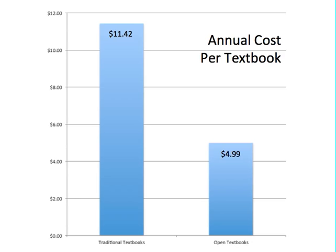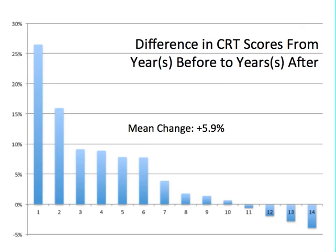What about outcomes? We've been watching student scores on the CRT test — Utah's state standardized tests. This chart shows the difference in scores in the years before teachers started using open textbooks versus the year or years after they started. What you see is an average increase of just about 6%. If the average teacher had 70% of her students proficient in chemistry before using open textbooks, that has moved up to about 76% after. So in the case of the Utah Open Textbook Project, we see that we can save significant costs — more than 55% — provide a book every student gets to keep and mark in, and also improve learning outcomes.